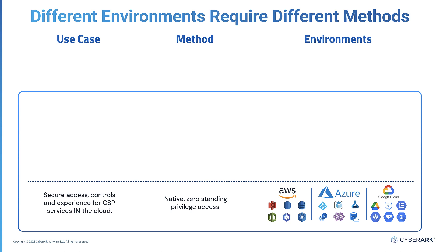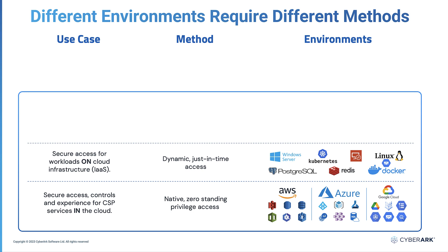The method in this case needs to be zero standing privilege, and we will see what it means and how it is implemented. Second, we have workloads running on the cloud, like VMs and DBs. These workloads take advantage of cloud flexibility and elastic compute, which auto-scales fleets of instances up and down based on demand. In this case, the best method is dynamic access based on attributes that is provisioned just in time.